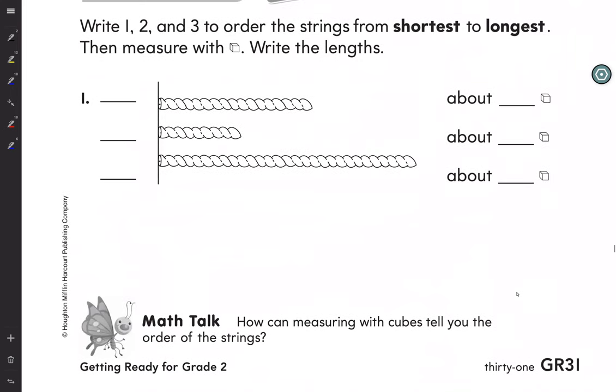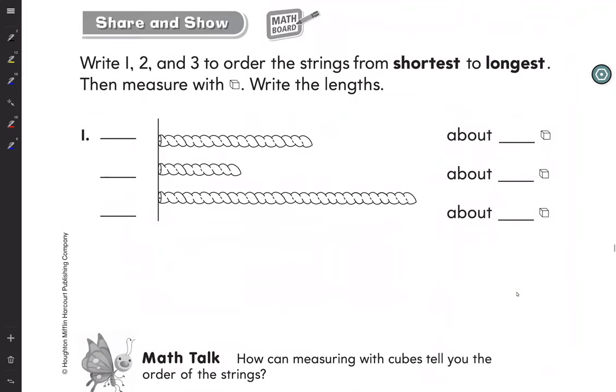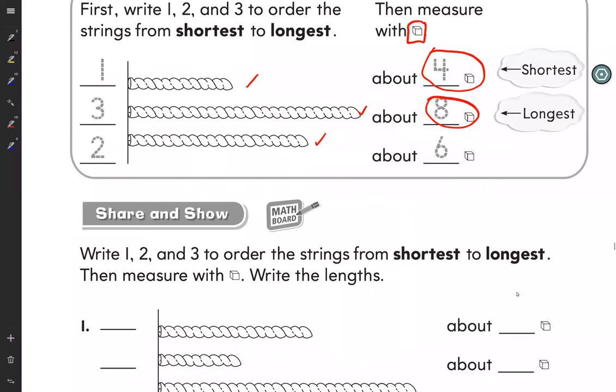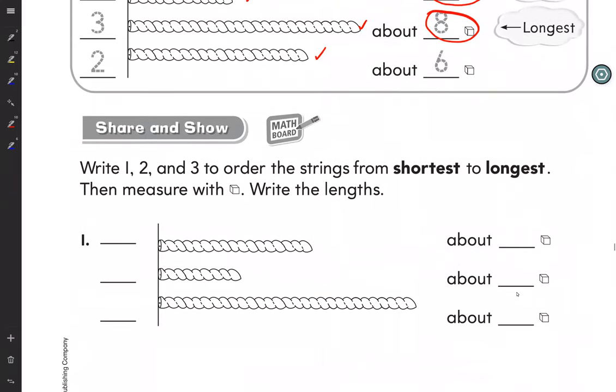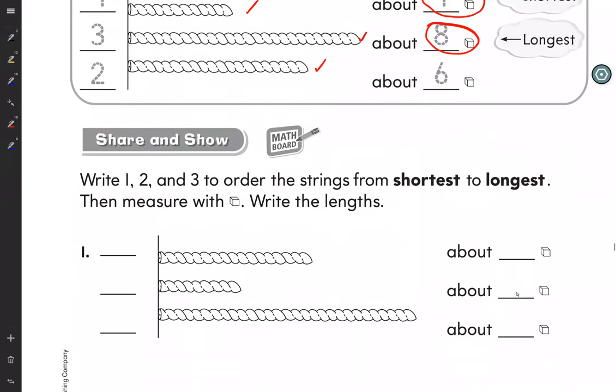Now share and show. Write 1, 2, 3 to order the string from shortest to longest. Then measure with the ones. Write the length. So it is the same thing to this one. We add number 1, 2, 3. And we can order in this field.